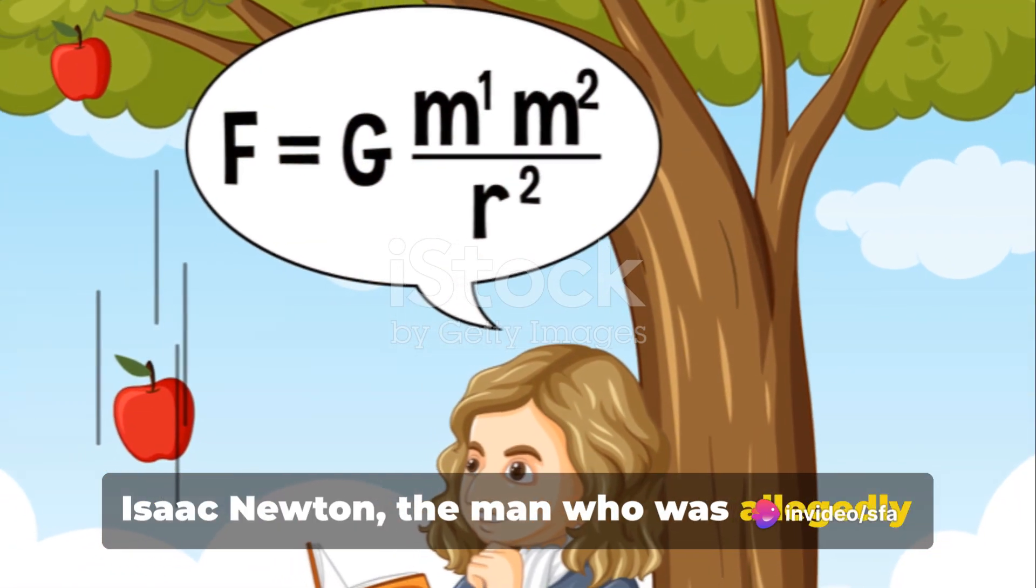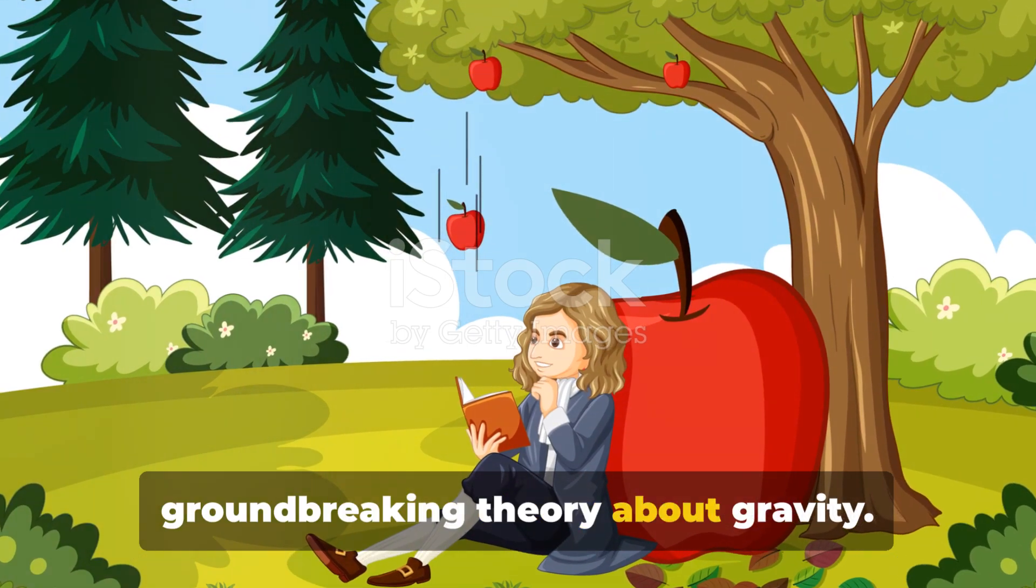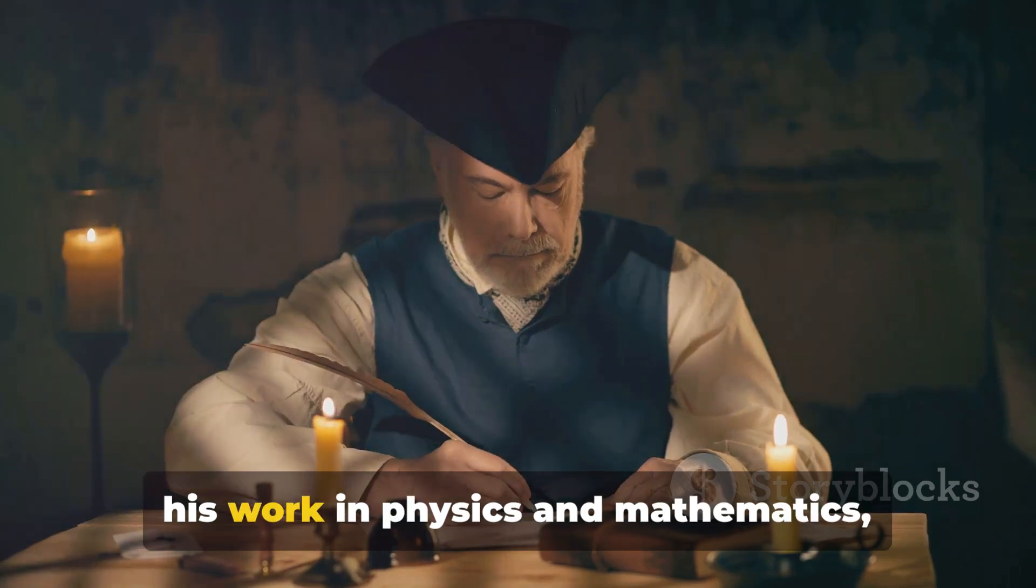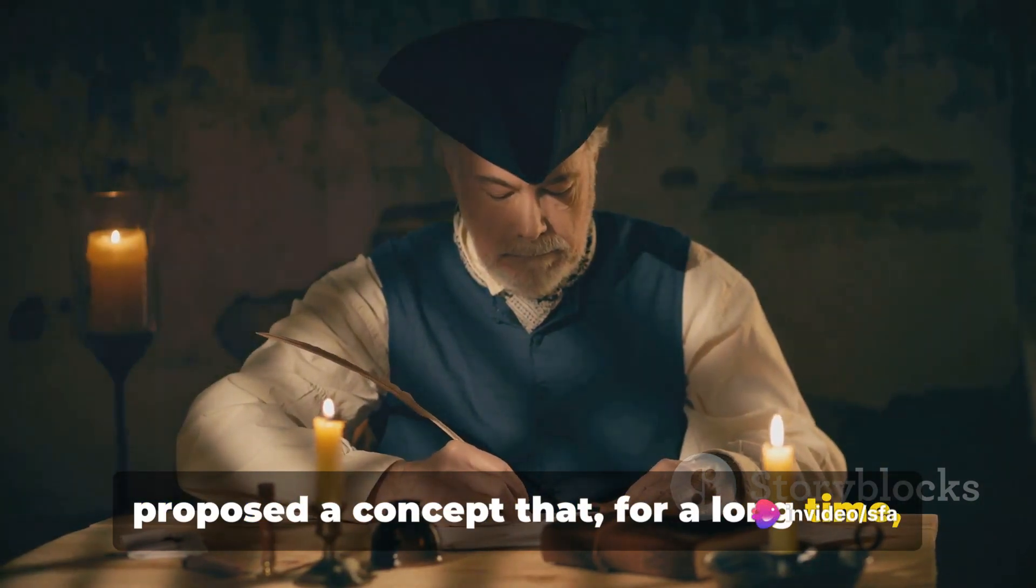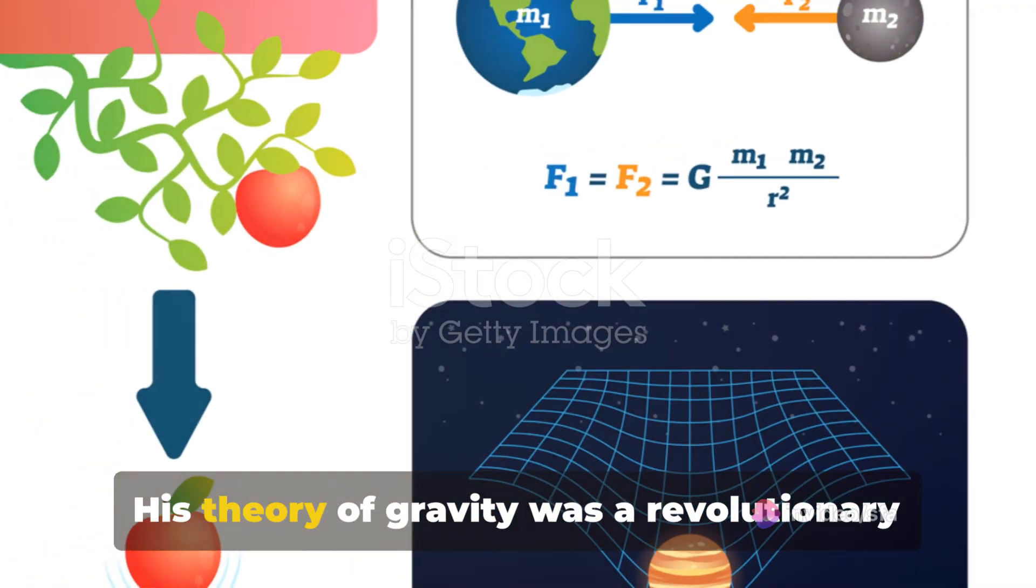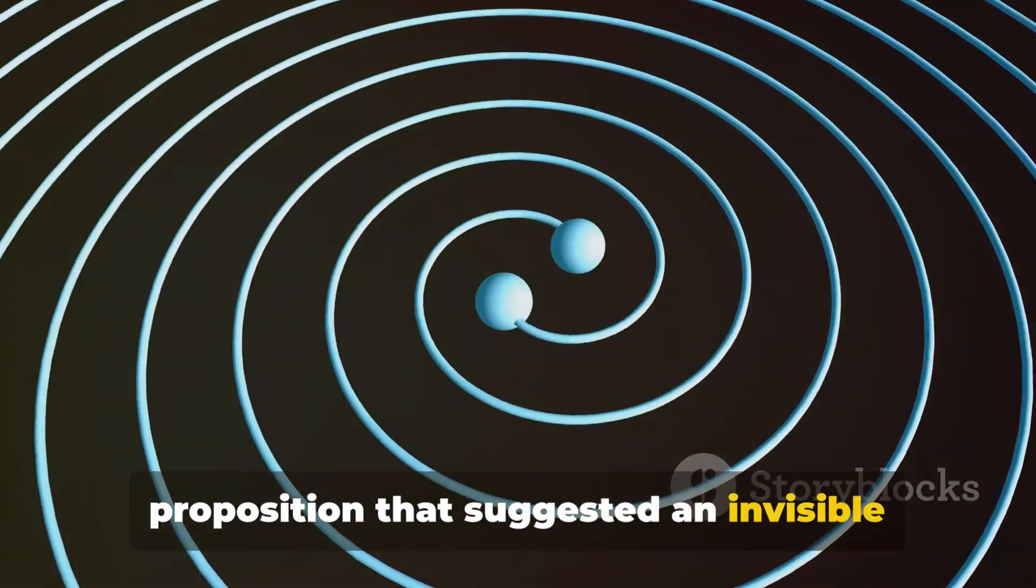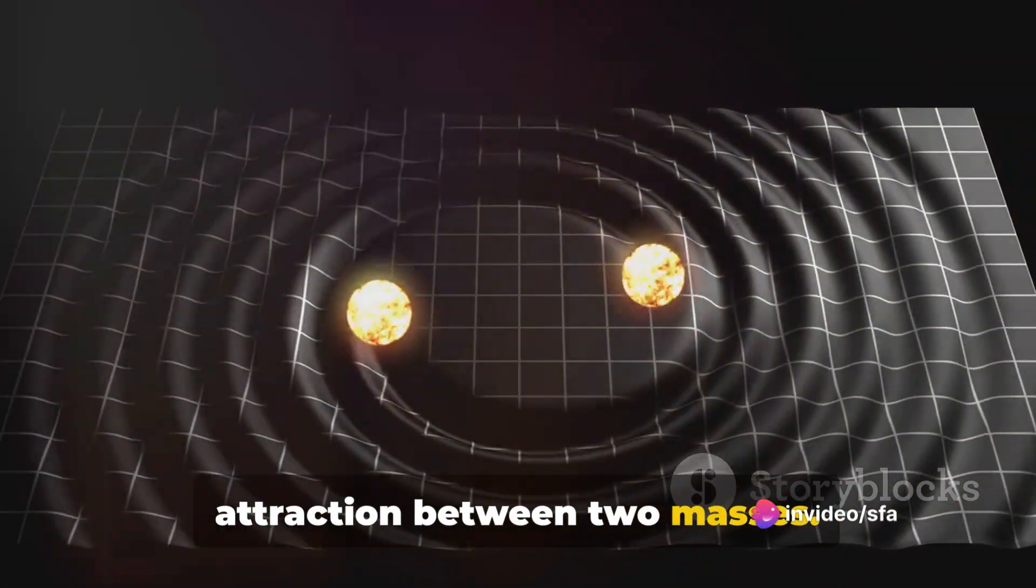Isaac Newton, the man who was allegedly inspired by a falling apple, had a groundbreaking theory about gravity. This 17th century polymath, renowned for his work in physics and mathematics, proposed a concept that for a long time shaped the way we perceived the universe. His theory of gravity was a revolutionary proposition that suggested an invisible force, gravity, was responsible for the attraction between two masses.